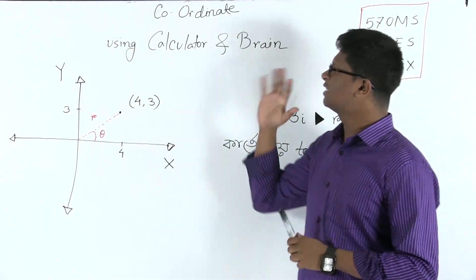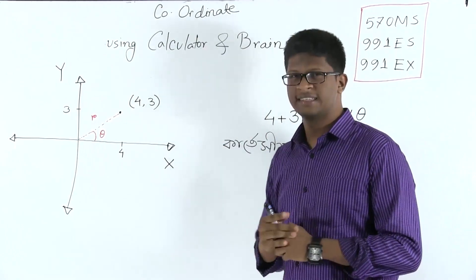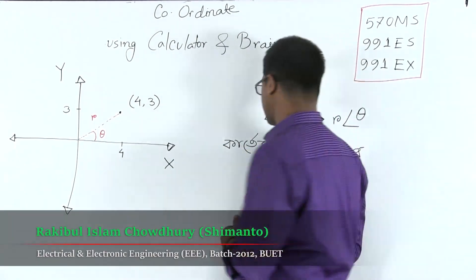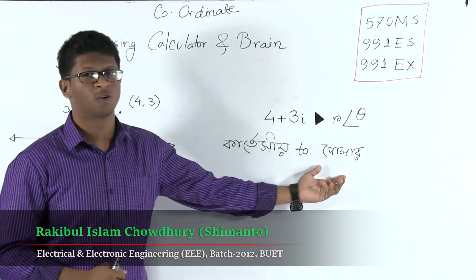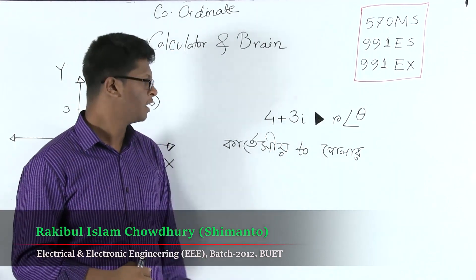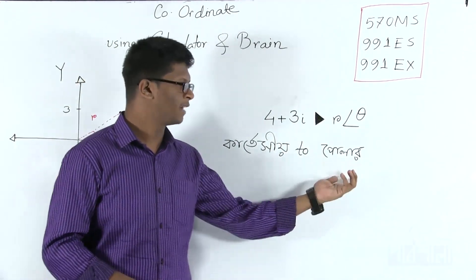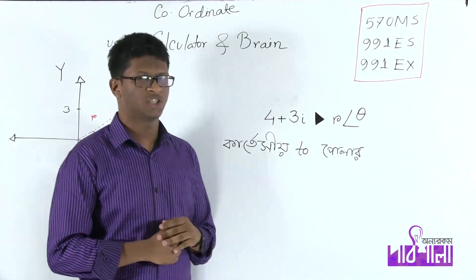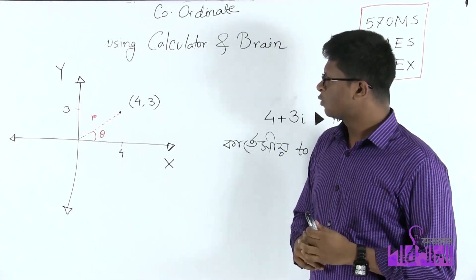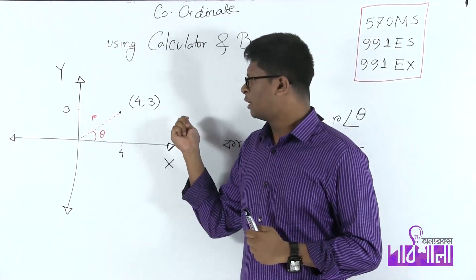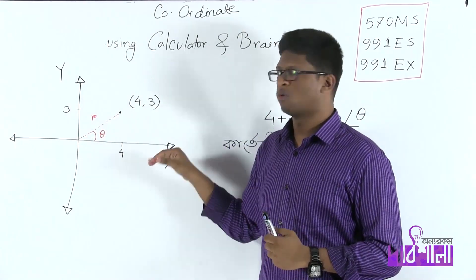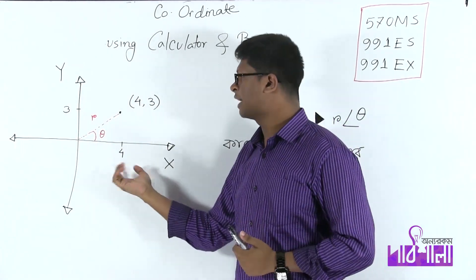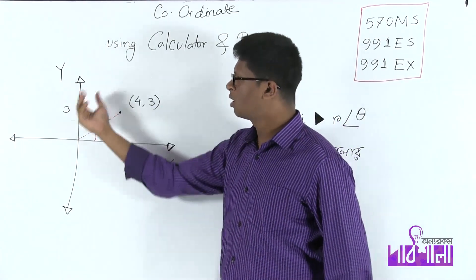What is the point? How do we change the coordinate system? That means, if we can see the polar plane, here we can see the example. Here we can see the polar plane. That means, x-axis is 4, or y-axis is 3.